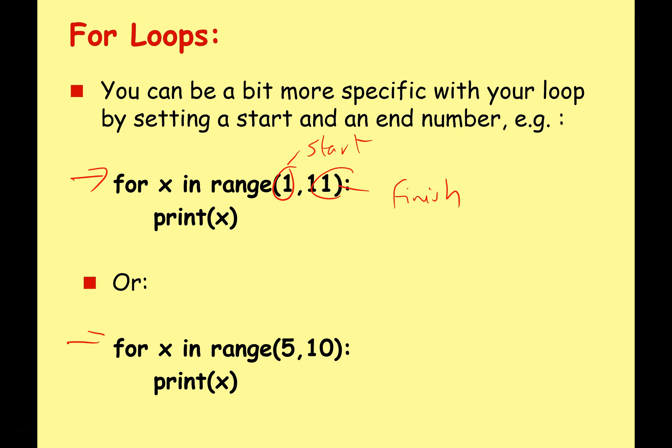Here we've got for x in range 5, 10, print x. This will print 5, 6, 7, 8, 9 and then stop. So we can give it a start and an end number and we'll get a printout between those. Remember it will always stop one less than the number that we've given here.